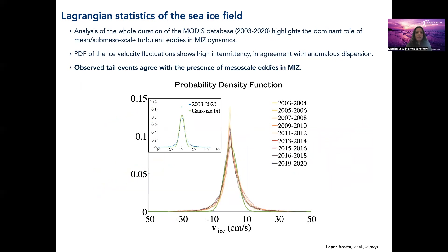We also looked at the PDF of the fluctuating velocities, which we defined following Gabrielski as the velocities going across the mean flow. We observed deviation from Gaussianity — our PDFs have very long tails. Tails are usually linked to intermittency in the flows, meaning there are sporadic, intense events, which are usually associated with turbulent eddies. This is more evidence that the ice floes here are rotating due to the oceanic flow field underneath, which most likely is characterized by the presence of meso-to-submesoscale turbulent eddies.